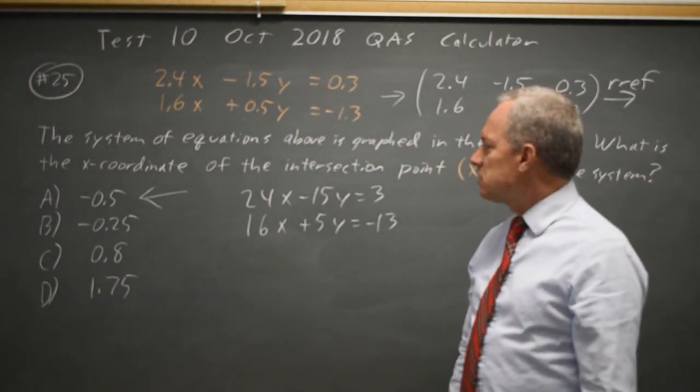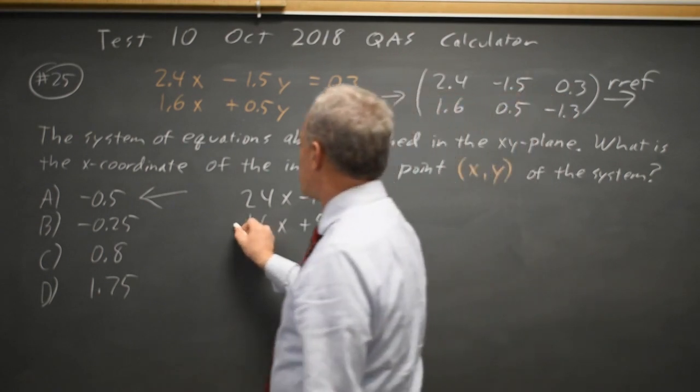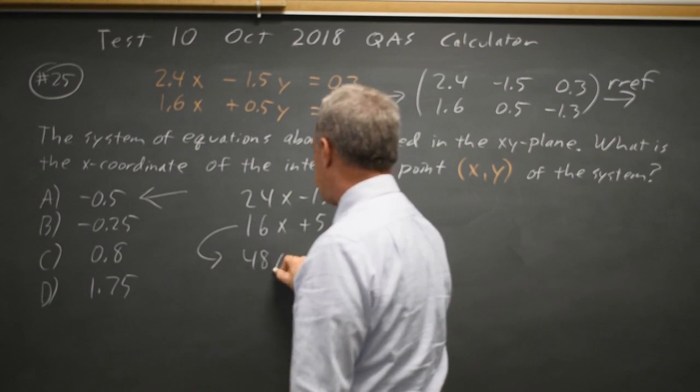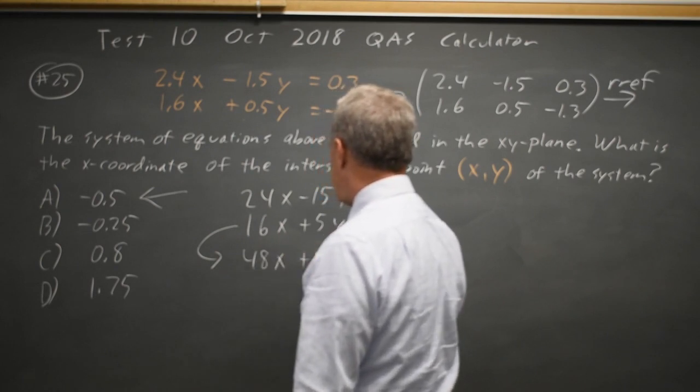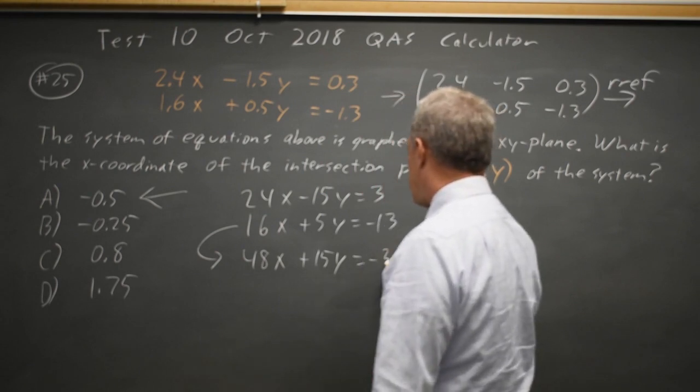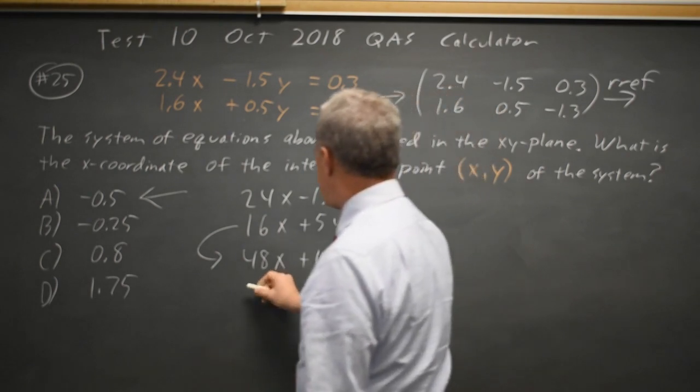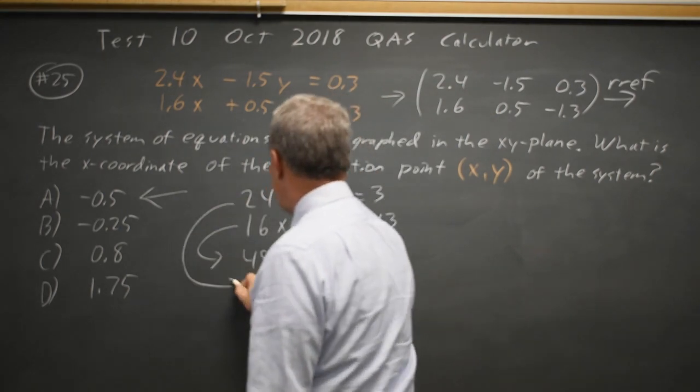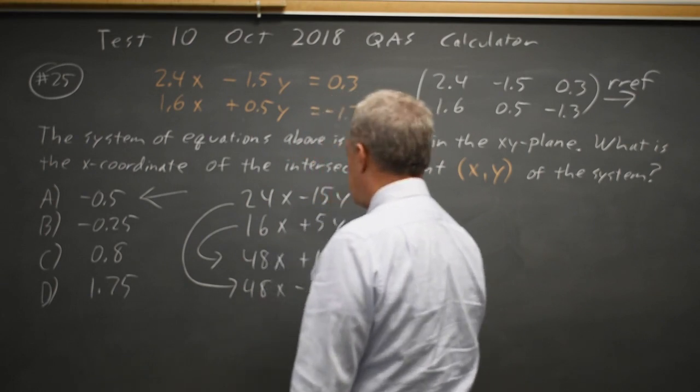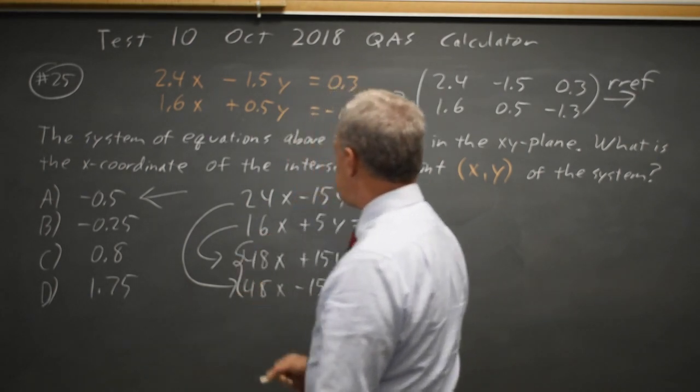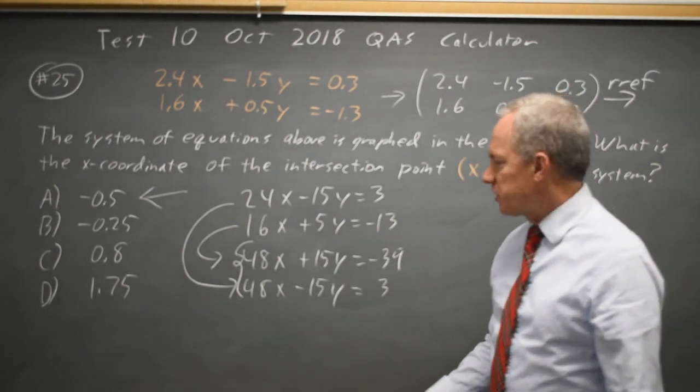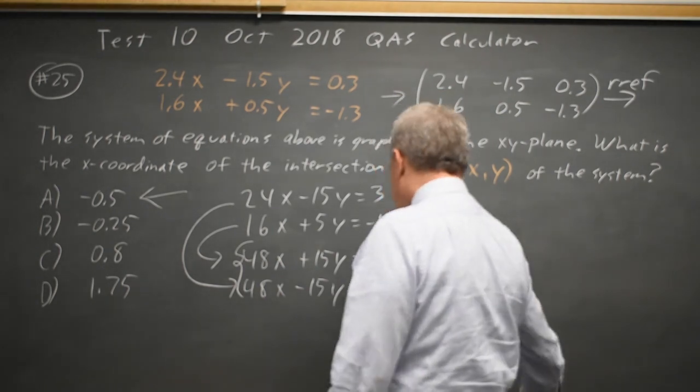I'm looking for x. So if I multiply the second equation by 3, 16 times 3 is 48, 5 times 3 is 15, negative 13 times 3 is negative 39. And I'll just copy my first equation. 48x minus 15y equals 3. And I chose to triple the second equation because now when I add these, the y terms will cancel.